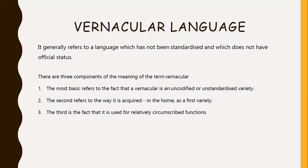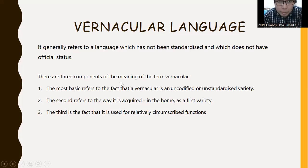There are three components of the meaning of the term vernacular. First, the most basic refers to the fact that a vernacular is an uncodified or unstandardized variety. Second, it refers to the way it is acquired in the home as a first language. Third is the fact that it is used for relatively circumscribed functions. The first component has been most widely used as the defining criterion, but emphasis on one or another of these components has led to the use of the term vernacular with somewhat different meanings. The term vernacular is also sometimes used to indicate a language used for everyday interaction without implying that it is appropriate only in informal domains.